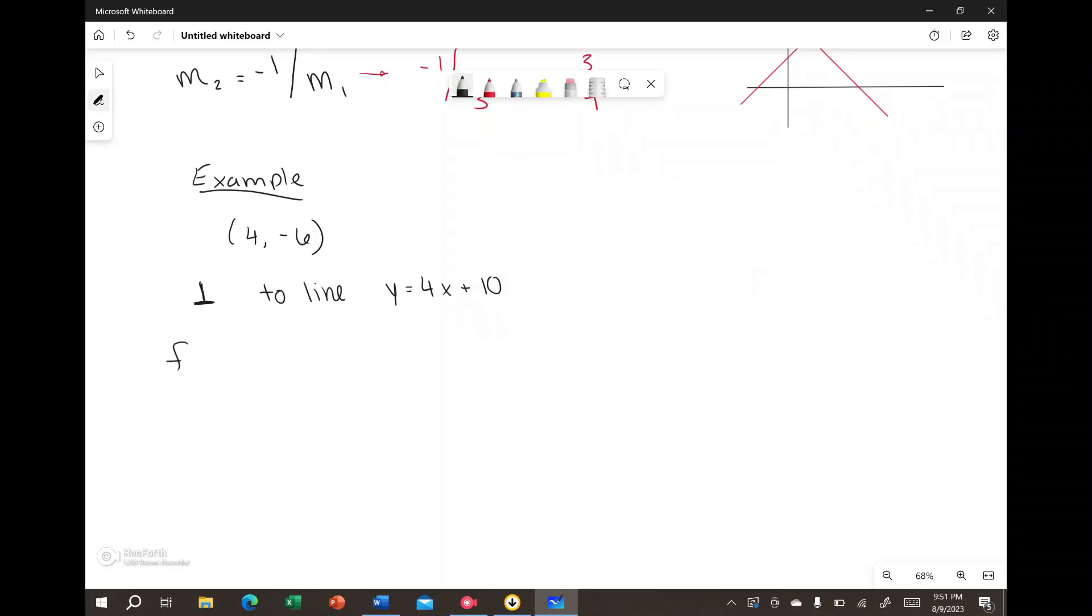So for starters, the slopes of the two lines that are perpendicular are related by, like I previously mentioned, negative 1 over m1.